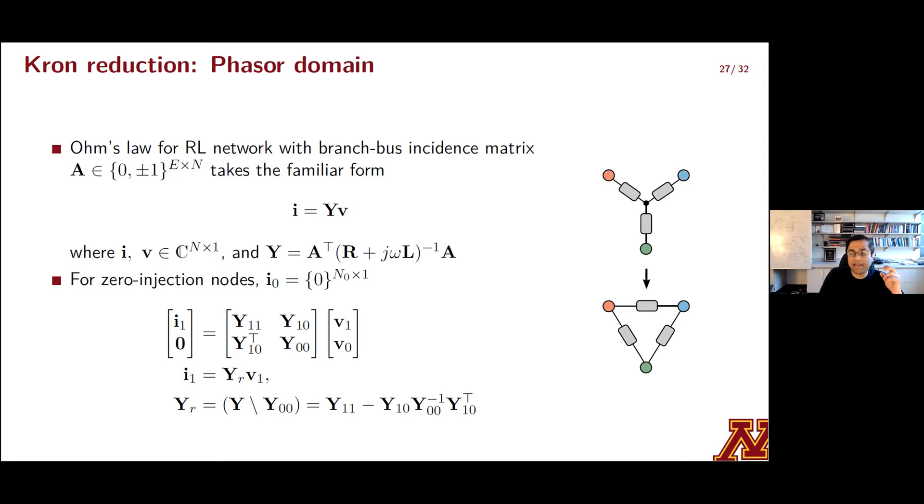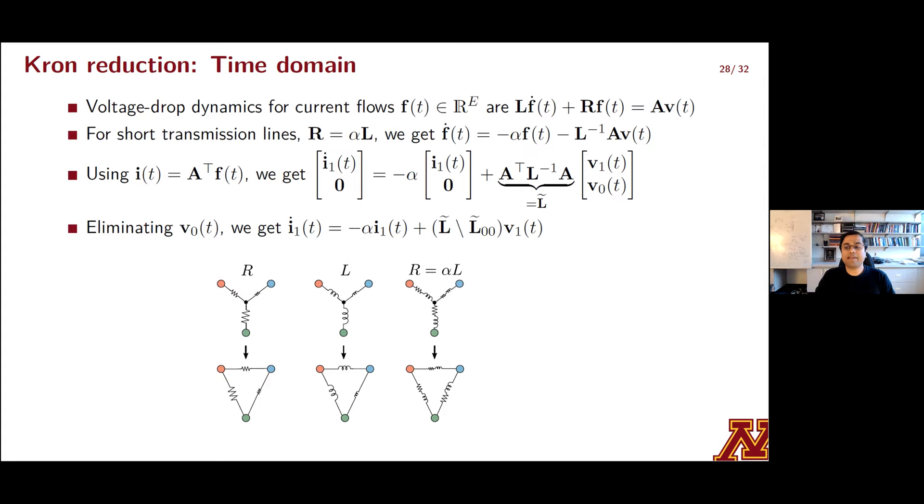So what we'll do is we'll denote the line current flows with f, and we'll now emphasize that v of t, f of t, i of t, these are all time domain real-valued signals. And we are starting with these line dynamics that are expressed in the first bullet. As we have hinted before, Krone reduction can be carried out in the time domain for homogenous networks, where these diagonal matrices that capture line resistances and inductances are related as R is equal to alpha times L, alpha being a fixed scalar. So trivially, I want to point out that this homogenous network assumption clearly captures purely resistive and inductive networks. But how does this all work?